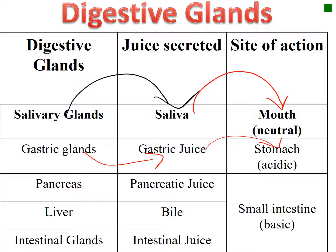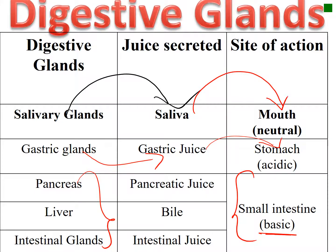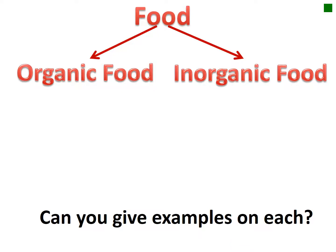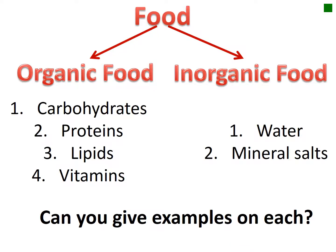Gastric glands secrete gastric juices into the stomach, where the medium is acidic, meaning the pH is less than 7. The pancreas, liver, and intestinal glands all act at the level of the small intestine, where the medium is basic. The pancreas secretes pancreatic juice, the liver secretes bile, and the intestinal glands secrete intestinal juice. The pH in the small intestine is greater than 7.